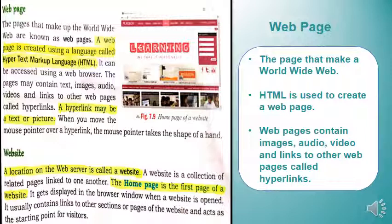Website: a location on the web server is called a website. A website is a collection of related pages linked to one another. Basically, websites connect with many pages. The home page is the first page of a website. When you open a website, the first page that opens is the home page, and it gets displayed in the browser window.